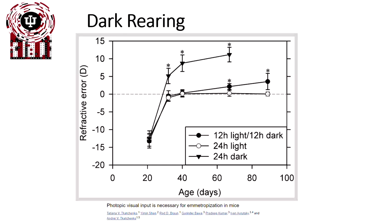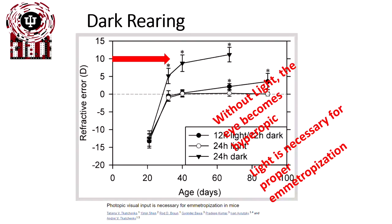So how do we know that the eyes need visual input to grow to the proper place? That first came about through dark rearing — placing an animal into a dark environment with cycles of 12 hours light/dark, 24 hours of light, or complete darkness. In mice, at birth they start at a relatively neutral refractive error. Without any light, the eyes become more and more hyperopic — they grow less and are shorter. With light, however, they start to approach essentially zero refractive error, or emmetropia. Light is a necessary component for proper emetropization.